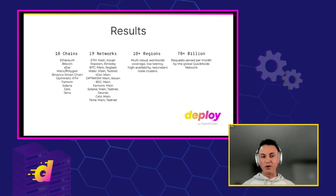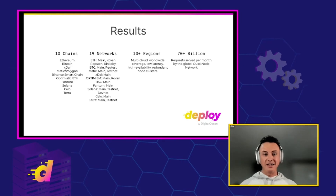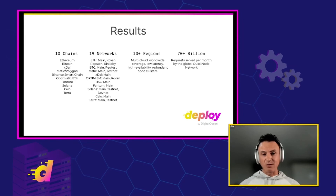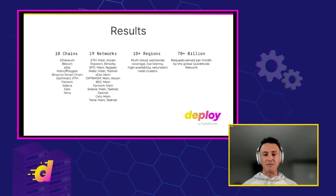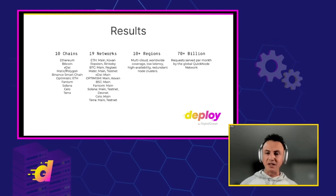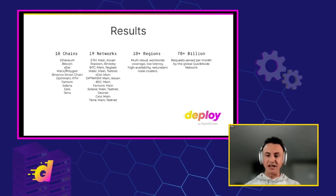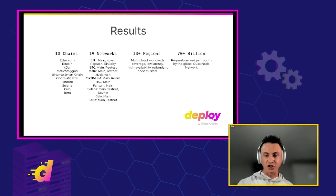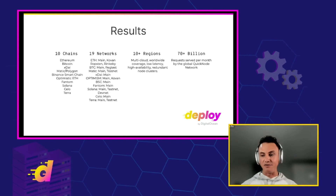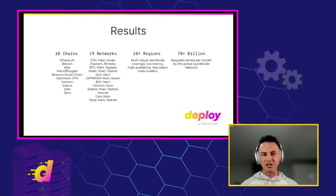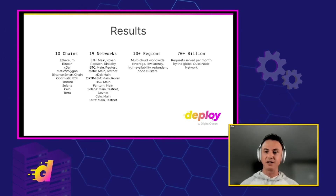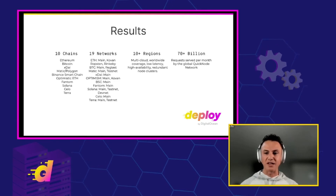Today QuickNode supports 10 different blockchains — Ethereum, Bitcoin, Matic Polygon, Solana, and more. We support 19 networks and we're adding more every single month. Our network is spread across 10 regions worldwide, allowing for a multi-cloud deployment with worldwide coverage. A person in the Netherlands shouldn't have to hop over the Atlantic Ocean to a data center in New York to get data. Studies show that reducing latency and improving the snappiness of your app leads to user happiness, better retention, and drives action like purchasing a product. Speed is at the core of our product. We serve over 70 billion API requests per month through our global network.